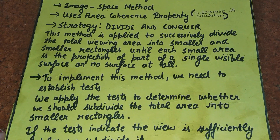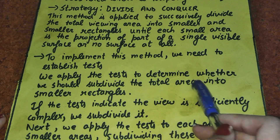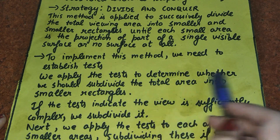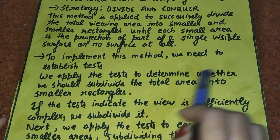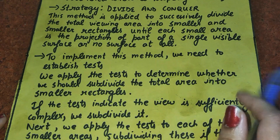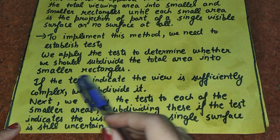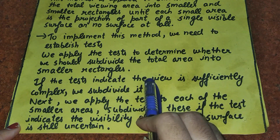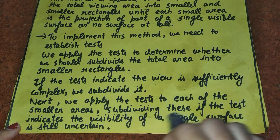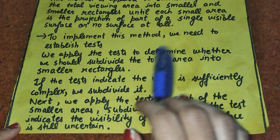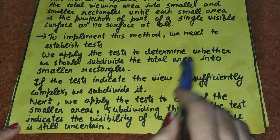To implement this method, we need to establish tests. We apply the test to determine whether we should subdivide the total area into smaller rectangles. Before applying subdivision, we perform some tests to check whether there is a need for subdivision or not. If the test indicates the view is sufficiently complex, we subdivide it. If the result shows the visible surfaces are difficult to detect, then subdivision of the area is needed to decrease the complexity.